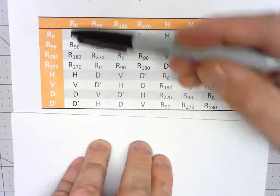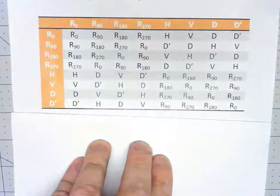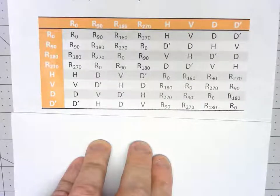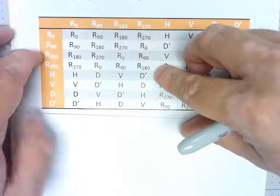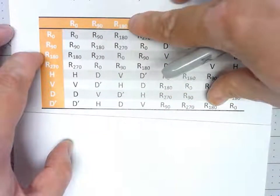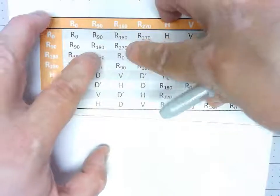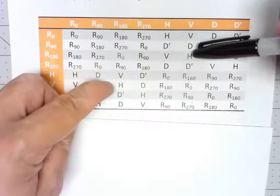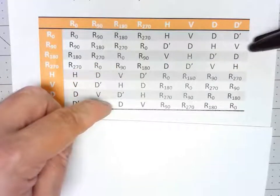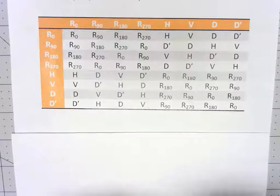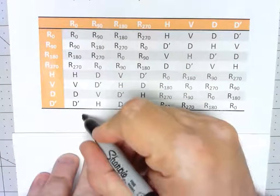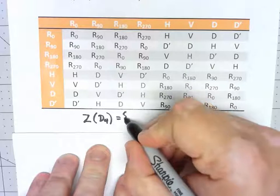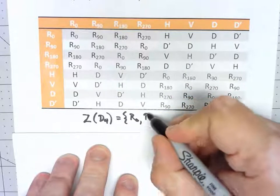For example, the identity is always going to commute with everything, so that's a little bit boring. But in this case, R180 is also going to be in the center. Because if I look at the row for R180 and the column for R180, it's got R180, R270, R0, then R90, V, H, D, D' — the same elements in the same order. So far, Z of D4 has to have R0 and it has to have R180.